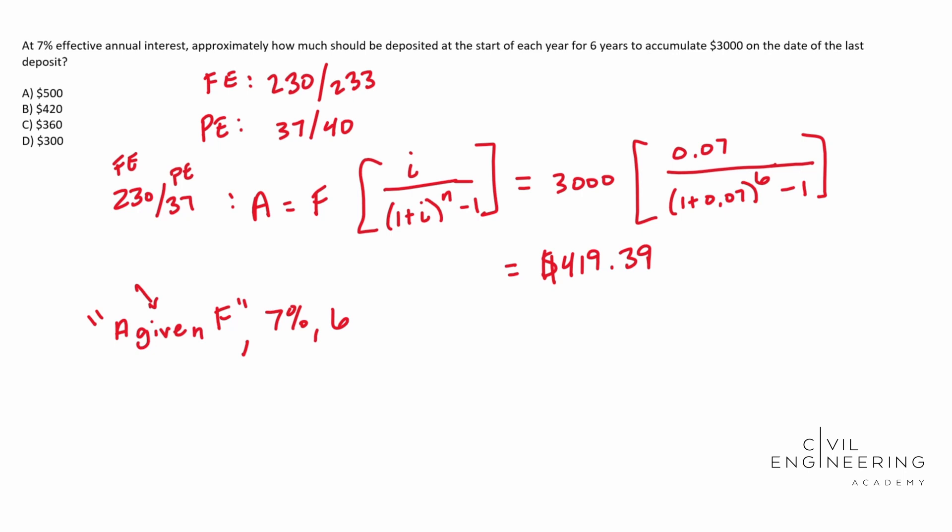So this represents what you're solving for. This represents your interest and this represents how many terms you're using or increments, right? So we have six years, 7% and we're solving for A given F. So if you are looking on those sheets, whichever 7% is on, six is going to be in a row. 7% is going to be the table that you look for. And then A given F is actually going to be the column.